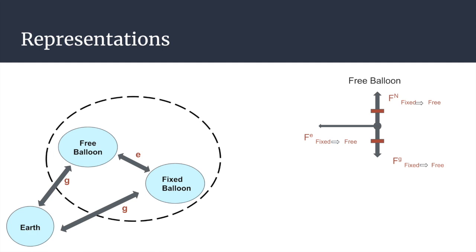Our free body diagram has two arrows for gravity and normal force as equal because the balloon isn't rising or falling into the ground, and our electrical force arrow is larger because the force felt from the fixed balloon is what causes the movement.